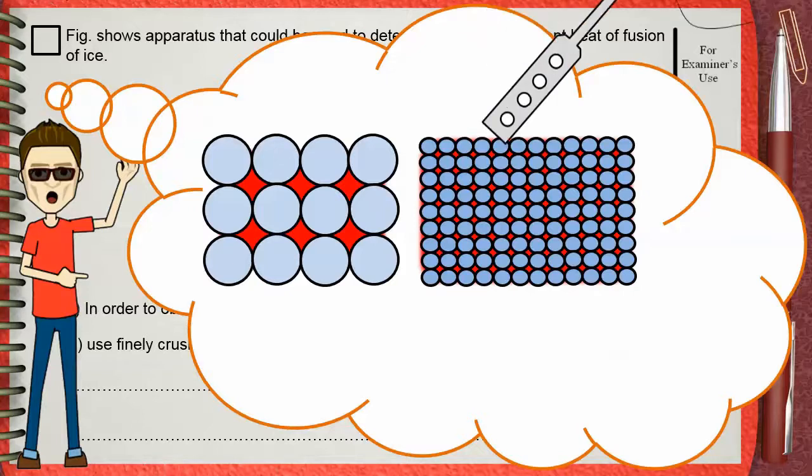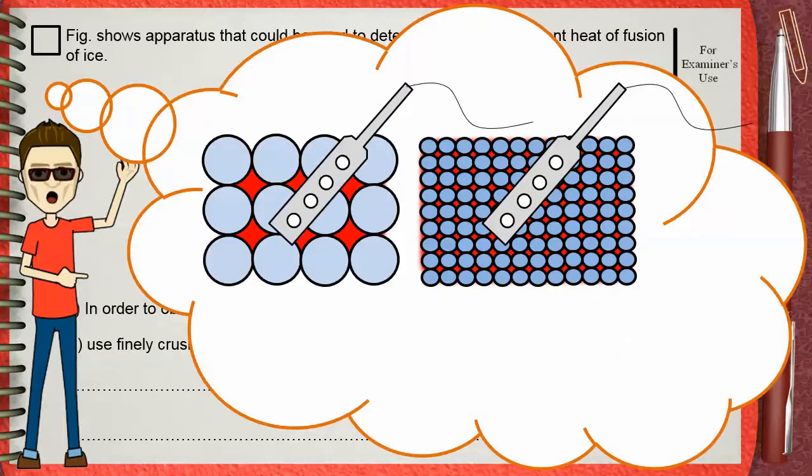When we put heaters in the ice, smaller pieces provide better contact between ice and the heater, so the amount of heat loss will be smaller.